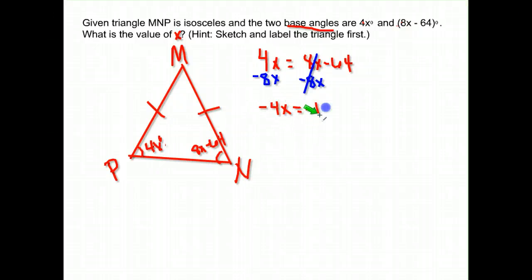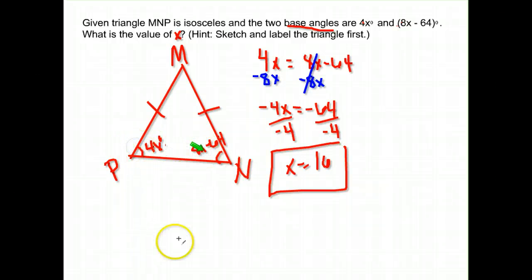My last step here: I divide both sides by negative 4, which gives me x equals positive 16. Again, that is all they asked for—they did not ask me to plug it back in and find the angle measure, so I am done.